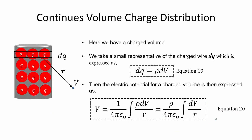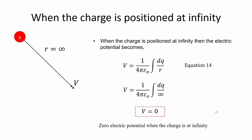For a continuous volume charge distribution, dq is a function of volume charge density shown by equation 19, and the electric potential for a volume charge distribution is given as equation 20. For charges positioned at large distances, the electric potential decreases, and if the distance is far enough — such as at infinity — the electric potential becomes 0, as shown by equation 14 where r equals infinity.